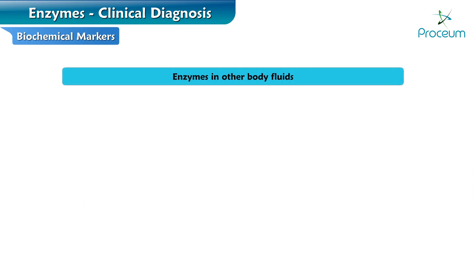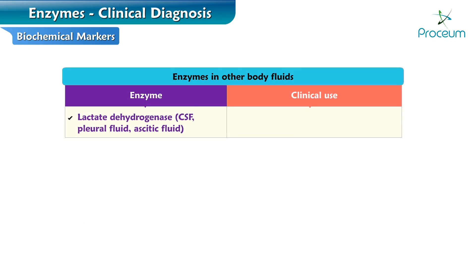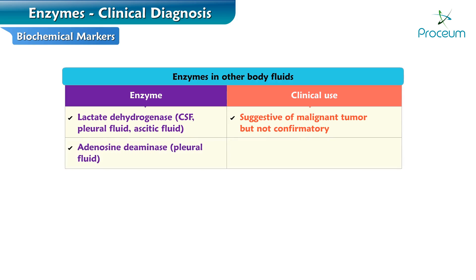Here are some enzymes in other bodily fluids. Lactate dehydrogenase is found in CSF, pleural fluid, and ascitic fluid, and its clinical use is suggestive of malignant tumor, though it is not confirmatory. Adenosine deaminase is found in pleural fluid and is suggestive of tuberculous pleural effusion. Amylase in urine is suggestive of pancreatitis.